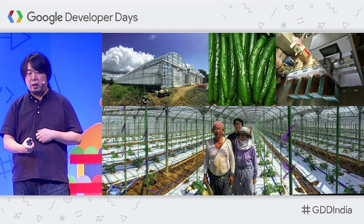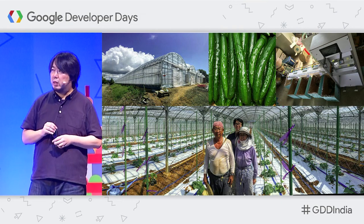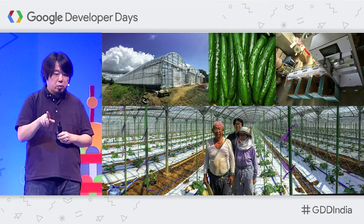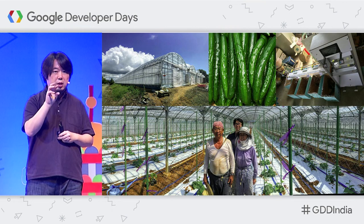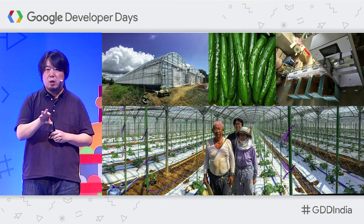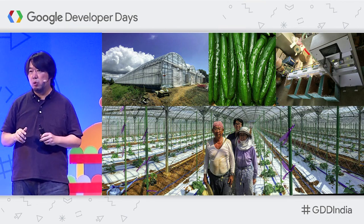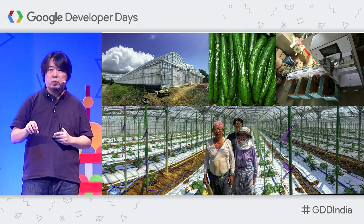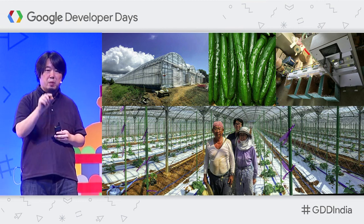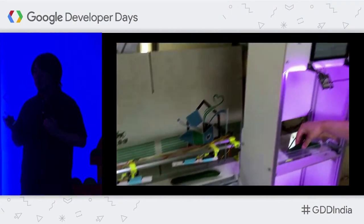Even a cucumber farmer in Japan has been using TensorFlow. There are three farmers in the picture. The guy in the middle has parents who have been doing cucumber farming for a long time, and he started helping them three years ago. He found that the most tedious and time-consuming task for cucumber farmers is classifying cucumbers into nine different classes. His mother spent eight hours a day classifying thousands of cucumbers. So instead of helping manually, he downloaded TensorFlow and built his own TensorFlow-based cucumber sorter.